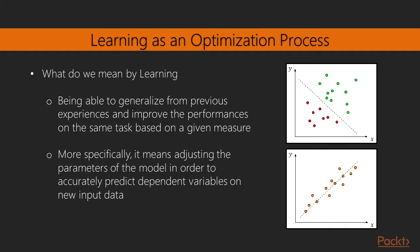More specifically, in the context of machine learning, it means adjusting the parameters of the model in order to accurately predict dependent variables on new input data.